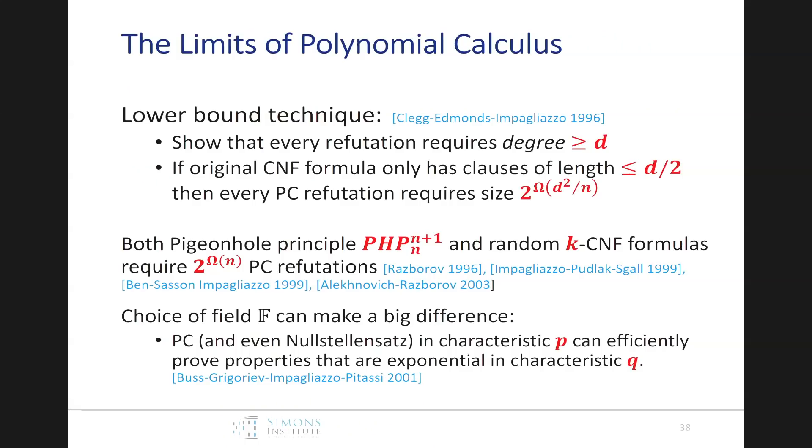Now, there are limits to polynomial calculus. In fact, Clegg, Edmonds, and Impagliazzo showed something just like we, Ben-Sasson and Wigderson had a result for width of CNF formulas implying that if you've got one clause that's big, then the whole proof must be big. In this case, it's, if you've got one big degree term, then the whole proof is big. And in fact, Clegg, Edmonds, and Impagliazzo did this proof first, and Ben-Sasson and Wigderson adapted it to the case of resolution. Unfortunately, both the Pigeonhole principle and random KCNF formulas require exponential size refutations. Didn't help too much. But here's an interesting thing that's a bit different from before. The choice of field F can actually make a big difference. So, if you're in characteristic P, you can efficiently prove properties that are exponential in some other characteristic Q.